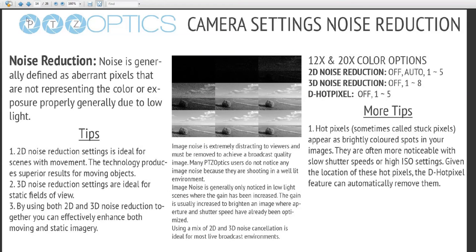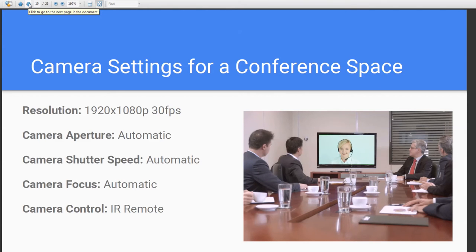Noise reduction is generally defined as apparent pixels that are not representing color or exposure properly due to low light — simply not enough light for the sensor to pick up color properly. 2D noise cancellation is ideal for scenes with movement, such as live sports, and produces superior results for moving objects. 3D noise reduction is ideal for static fields of view. Using both together will really enhance both moving and static imagery, and even in low light situations we can get a very clear image.